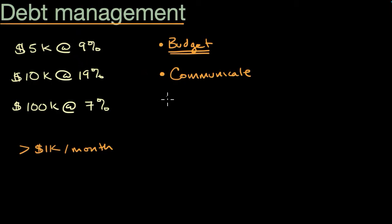Another thing you can do in certain situations is consolidate your debt. This means you might take out a loan that you can use to pay off these other loans. Let's say your house is worth more than $100,000. You might want to take out a $115,000 loan against your house.